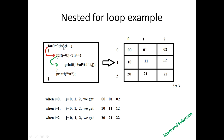Similarly, after incrementing i to 2 — since 2 less than 3 is true — it goes to the inner loop again and we get the same pattern: j equal to 0, 1, 2, giving output 2 0, 2 1, 2 2. This is the full output of the program printed in matrix form.